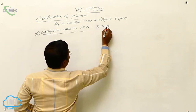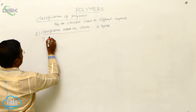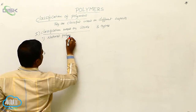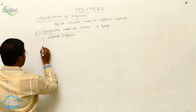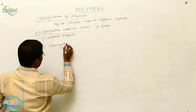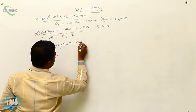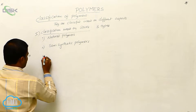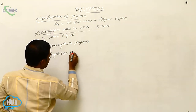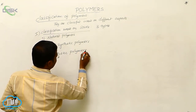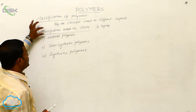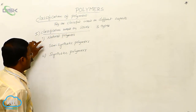The three types are: number one, natural polymers; second, semi-synthetic polymers; and third, synthetic polymers. So, how many types of polymers are available based on their availability or based on their source? They are natural polymers, semi-synthetic polymers, and synthetic polymers.